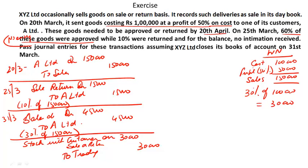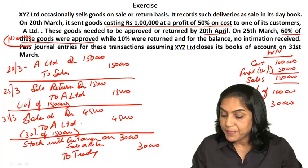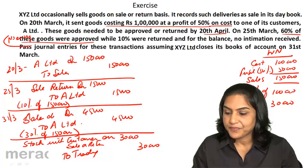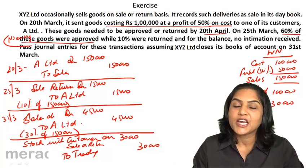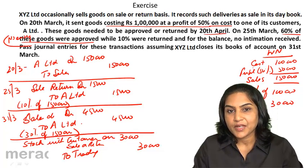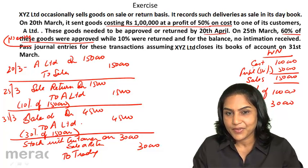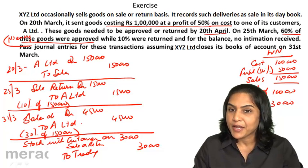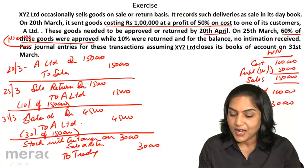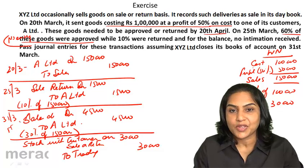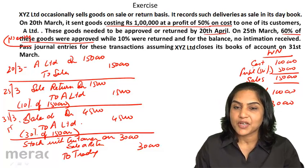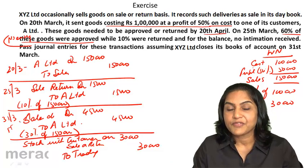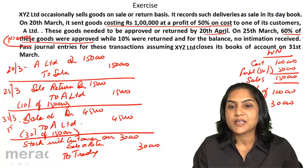This is the scheme of entries as at 31st March. In the next year, if the customer approves these goods, we need to pass a new sale transaction, because we had cancelled the sale entry for the 30% lying with the customer that was not approved and not returned. However, if the customer returns the goods in the next year, we need not pass any entry.